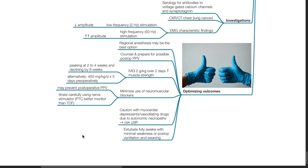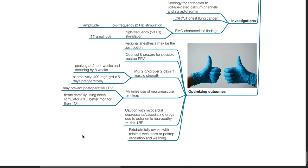Optimizing outcomes in patients with LEMS. Regional anesthesia may be the best option. Counsel and prepare for possible post-operative mechanical ventilation. IVIG 2g per kg over 2 days improves muscle strength. Minimize the use of neuromuscular blockers. This may prevent the need for post-operative mechanical ventilation. If neuromuscular blockers are used, titrate carefully using nerve stimulator. Post-tetanic count is a better monitor than train of four. Caution with myocardial depressants or vasodilating drugs due to autonomic neuropathy and risk of hypotension. Extubate fully awake with minimal weakness or proceed with post-op ventilation and weaning.